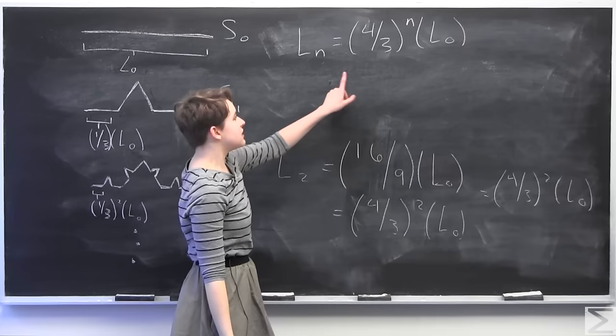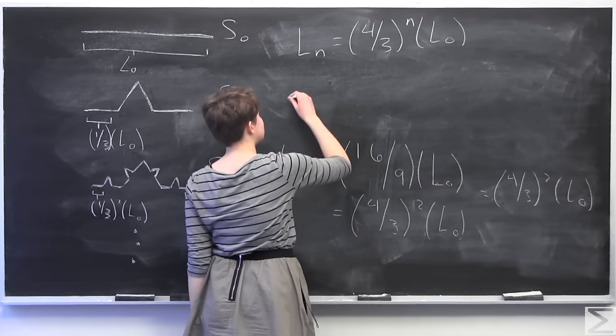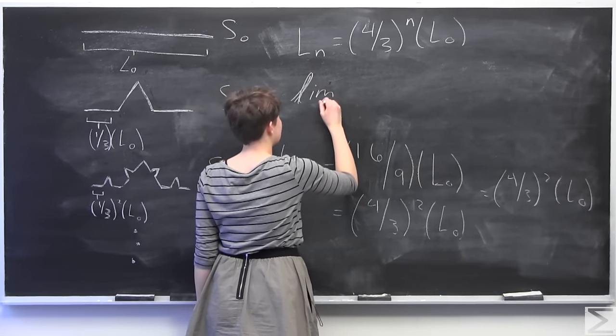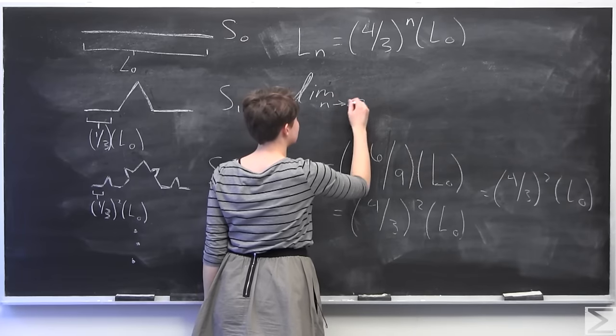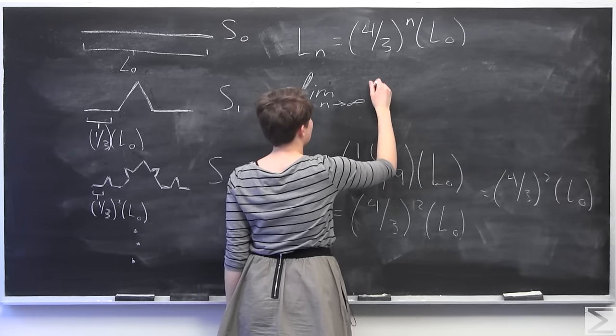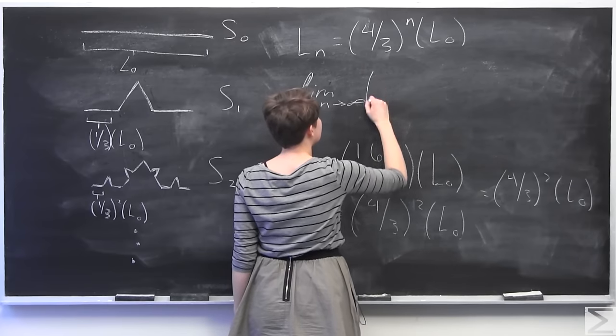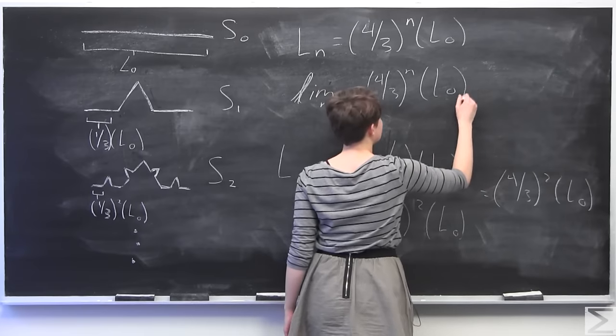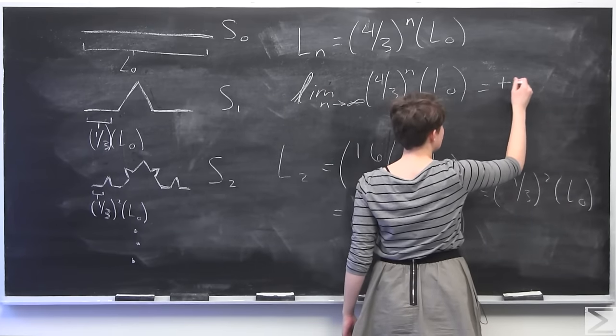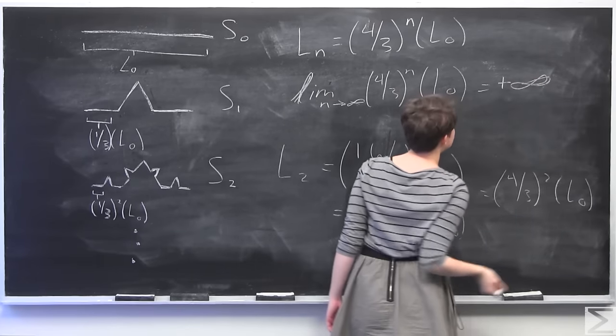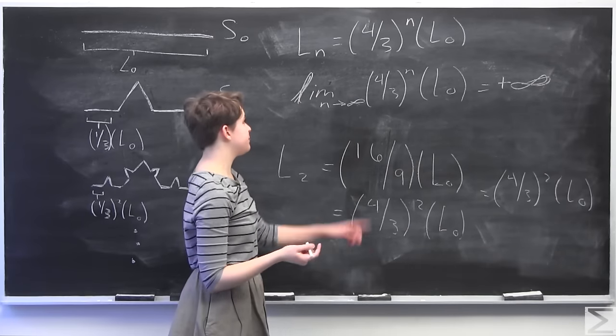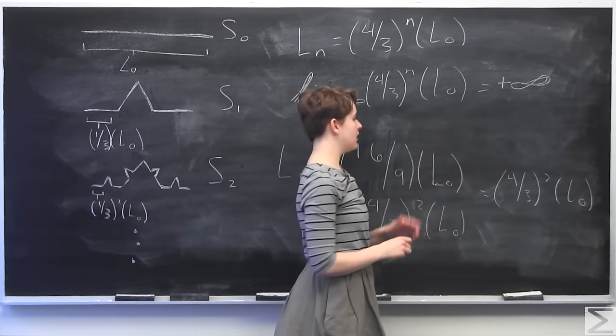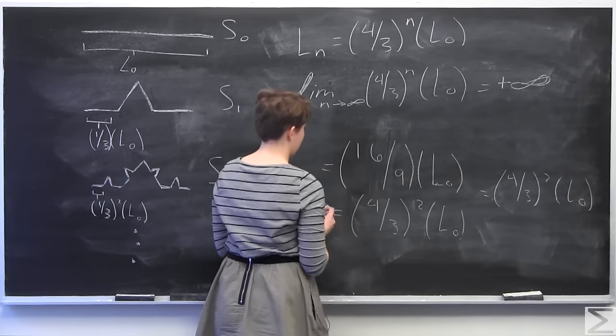So to prove that this has infinite arc length, we're just going to take the limit as n goes to infinity. So the limit as we iterate on to infinity of Ln, so of 4 thirds to the n times L0. And this is going to go to positive infinity.